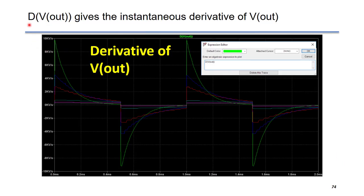As I said before, the D of Vout gives the instantaneous derivative of Vout. So we can simply change this trace name to capital D of Vout. We can see the time domain instantaneous derivative of Vout.